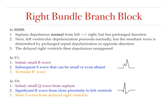Looking at V1 and V6 in right bundle branch block: initially you see a small R wave in V1 and a small Q wave in V6 from septal depolarization. Next, there's a subsequent S wave that's small or even absent in V1, and a very large R wave in V6 from depolarization of the large left ventricle. Finally, there's a terminal R prime wave in V1 and a wide S wave in V6 from the delayed right ventricular depolarization — almost a mirror reflection. This gives the classic 'bunny ear' pattern in V1 and a reverse bunny ear in V6.